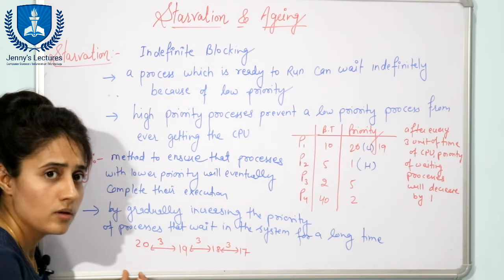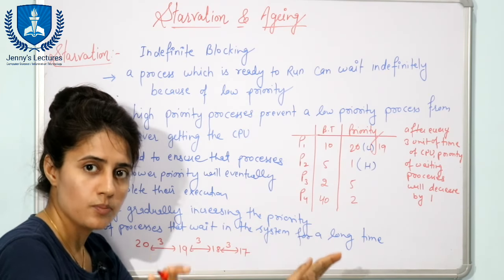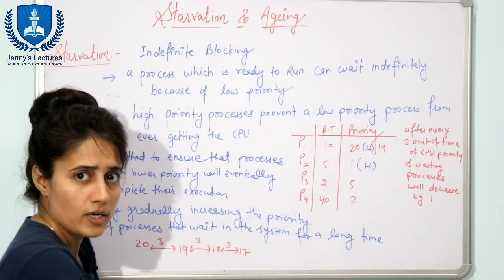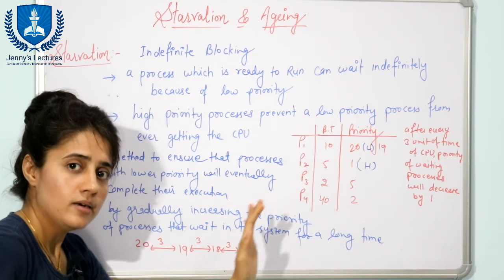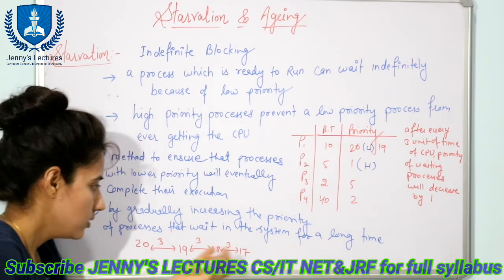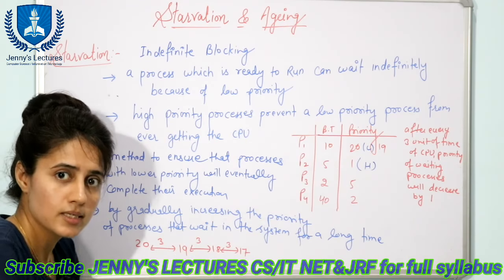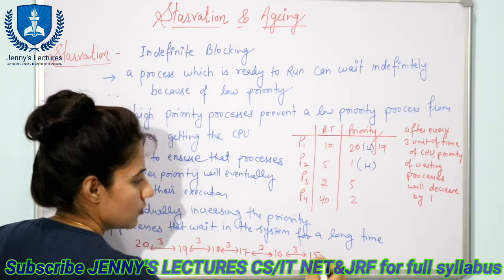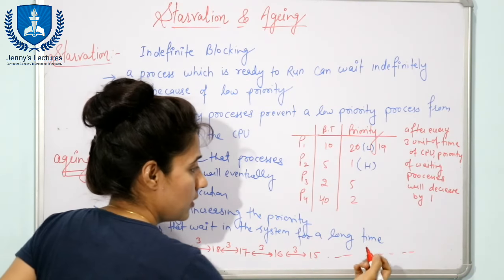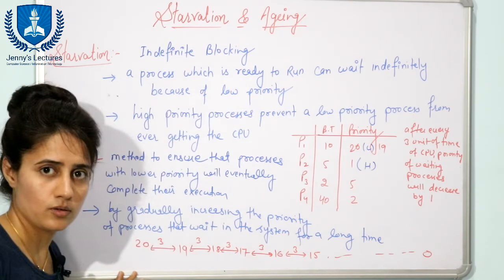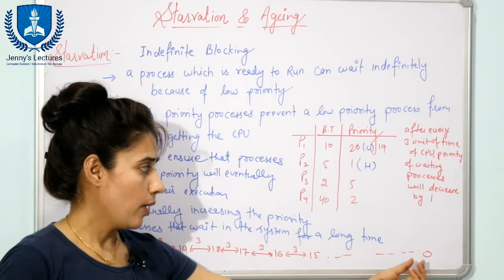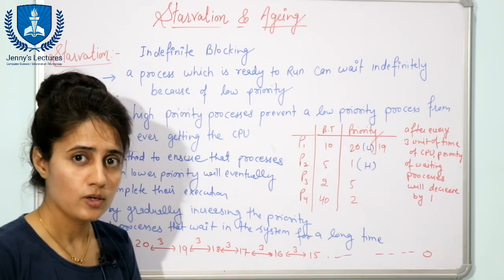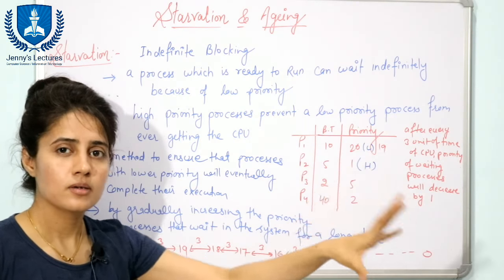These three units of time mean other processes are running in the CPU. If you draw a Gantt chart, those higher priority processes are running, and with the execution of those processes, the priority of the waiting process is increasing. After three units it becomes 16, then 15, and ultimately at some point the priority will be zero — meaning that process has the highest priority and P1 will ultimately get the CPU.